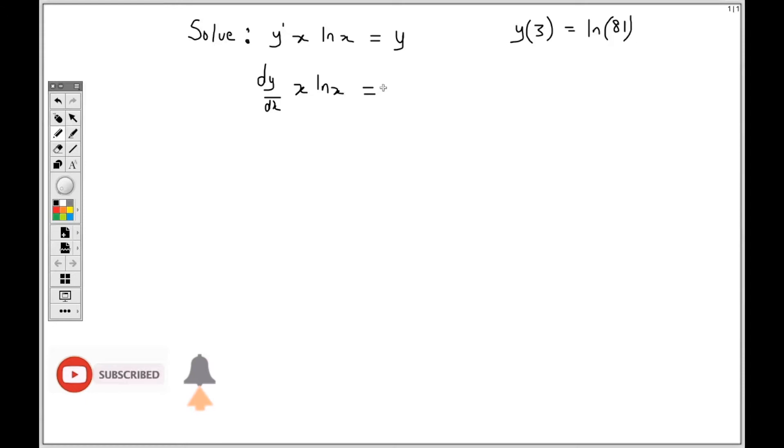When I am solving this, I am first going to find the general solution, then the particular solution, since I am given when x is 3, y is ln 81. That's what it means.